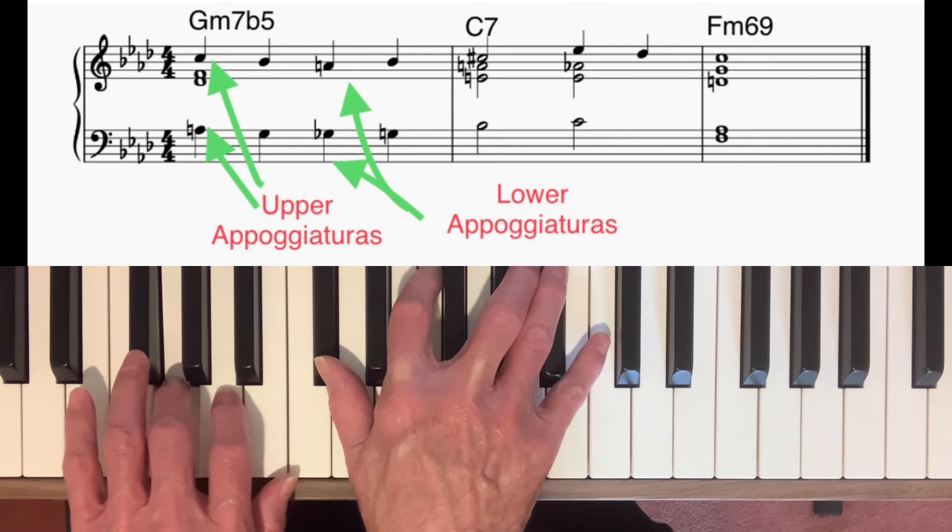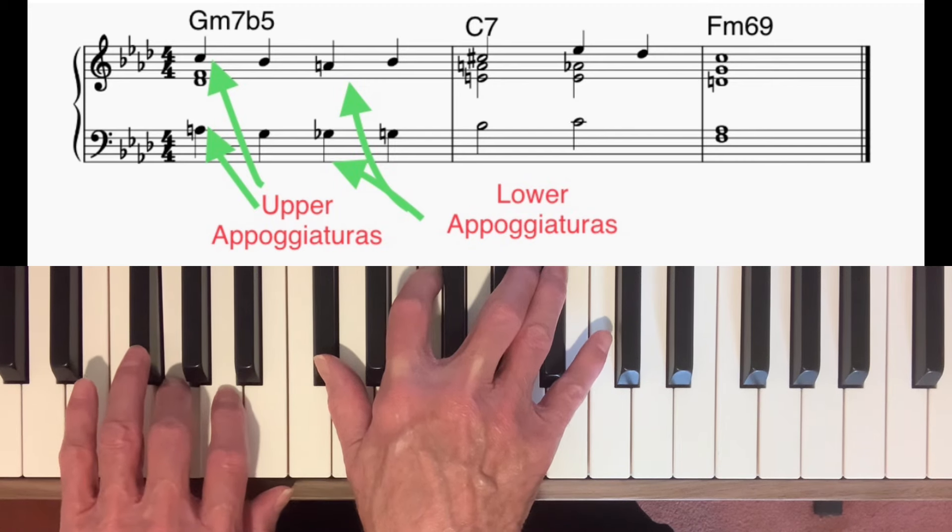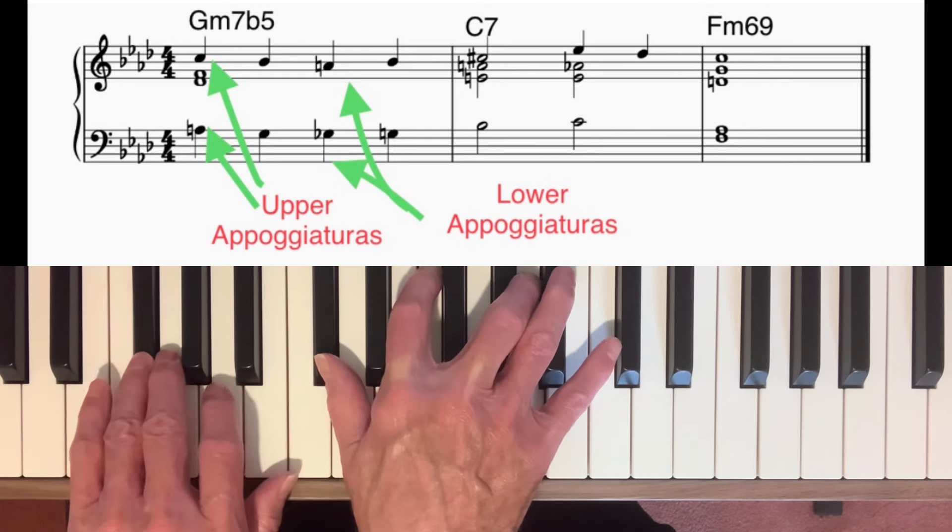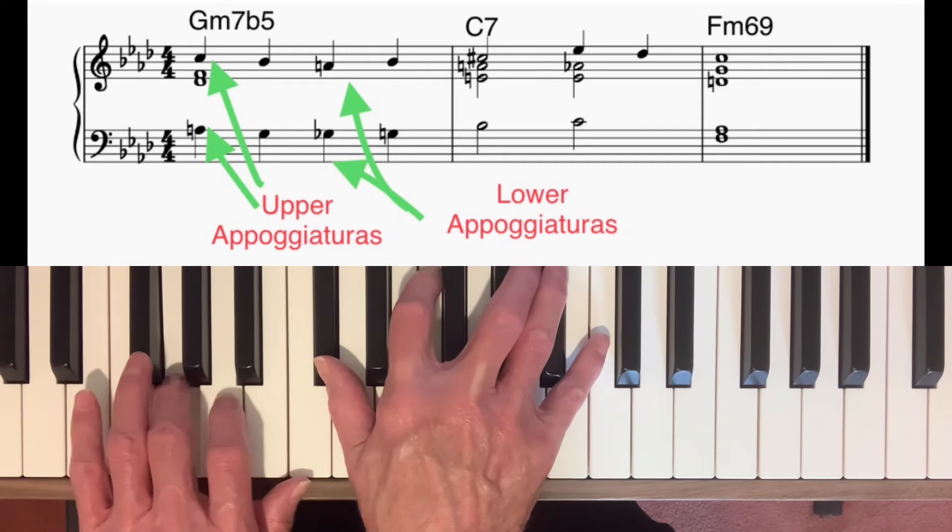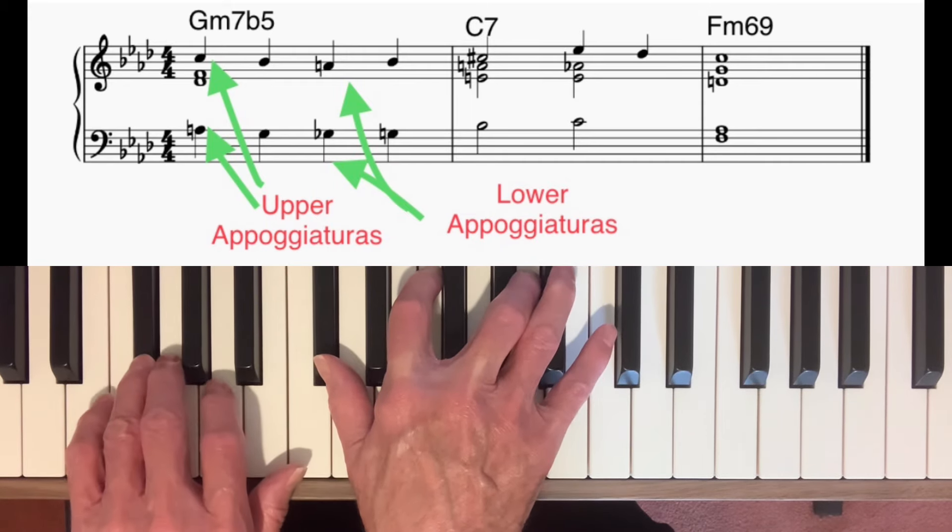I then went to lower appoggiaturas by once again using notes from the diminished 7th chord. And then back to the chord note. So we get tension, resolution, tension, resolution.